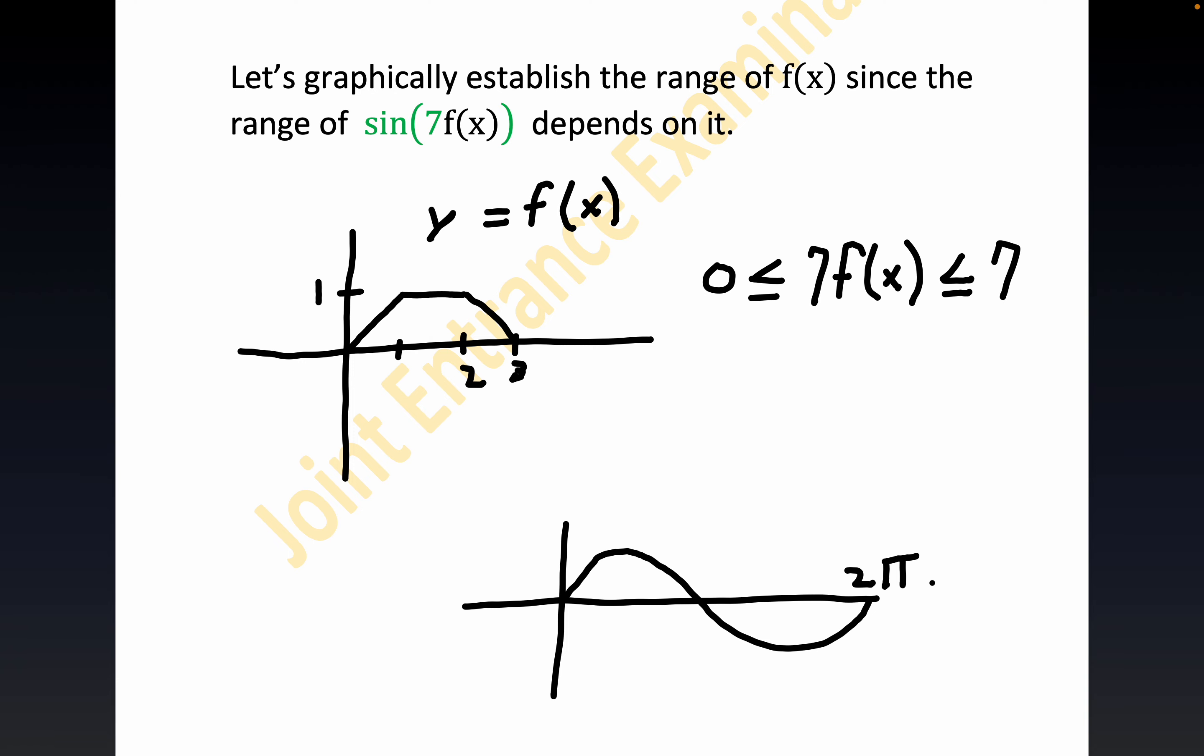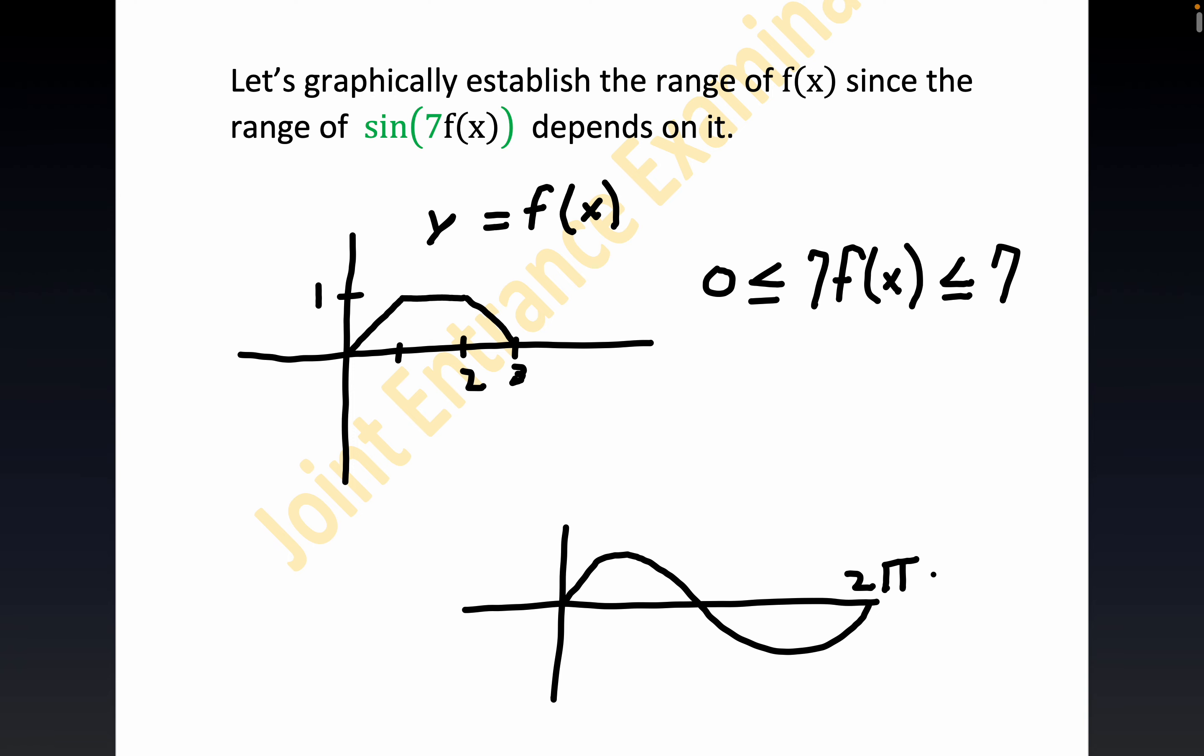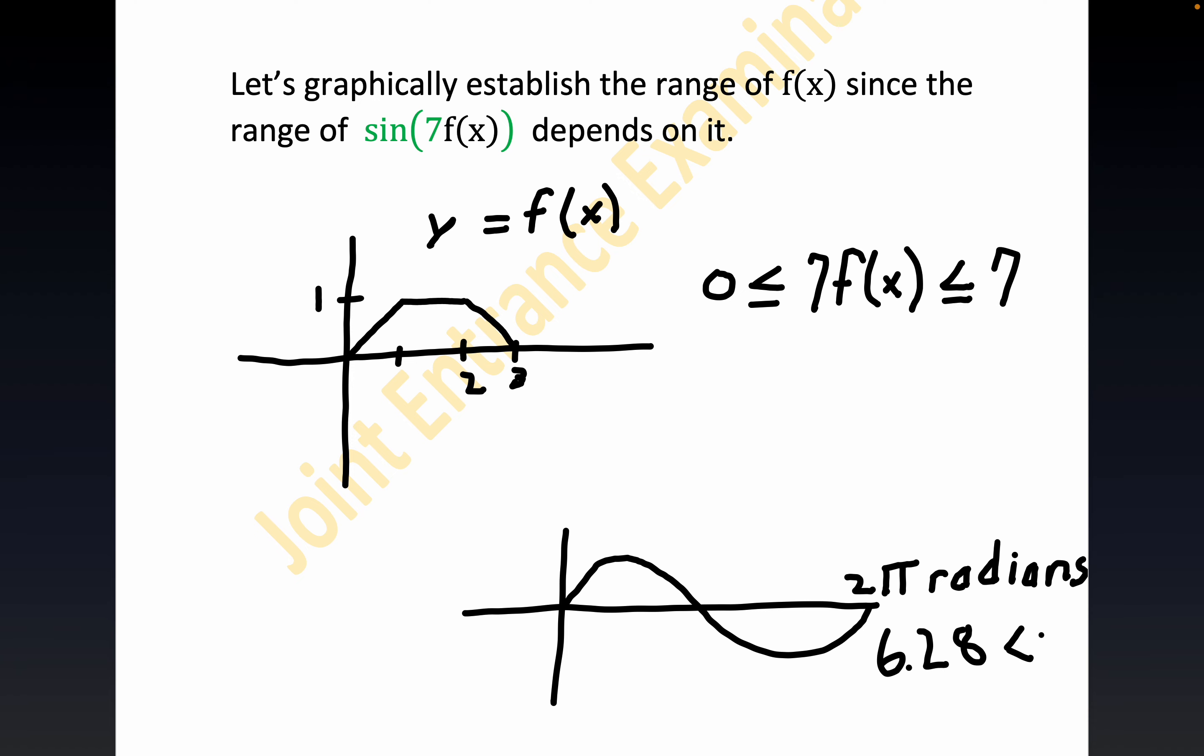But notice that this is approximately 2π radians. 2π radians is approximately 6.28 decimal. 3.14 is the common approximation of π. So 2 times 3.14 is 6.28. And of course, that's radians. But notice that's less than 7. That's less than 7. So we know for a fact that this function will sweep through more than one period of the sine wave. Now notice up here, the maximum value is 1.